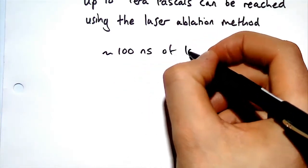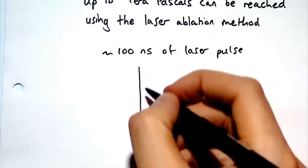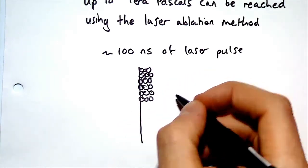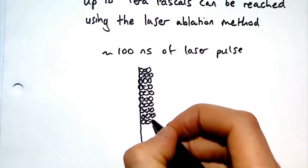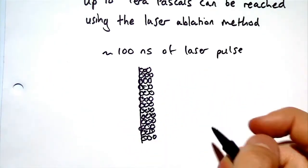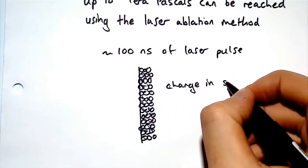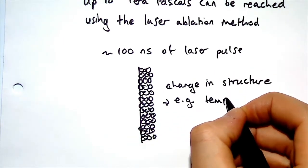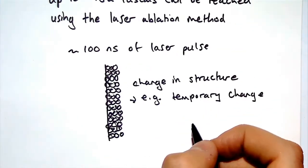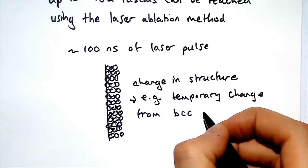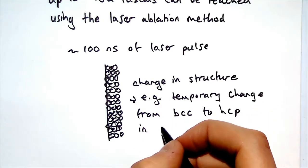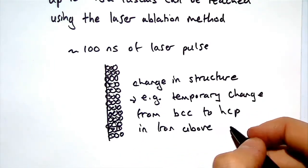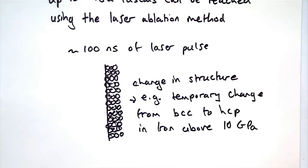After 100 nanoseconds for example, the structure could look like this. Initially we had a sort of FCC structure, but here it could have changed to BCC for example. One example experimentally is iron. At high pressures, iron changes from a BCC to a HCP or hexagonal closed-pack structure. This occurs above about 10 gigapascals.